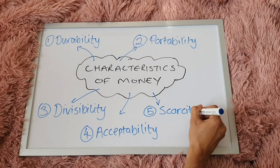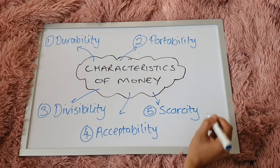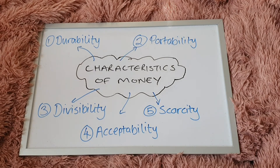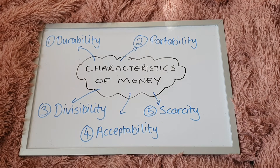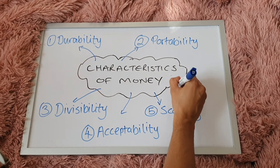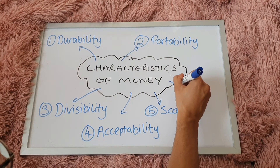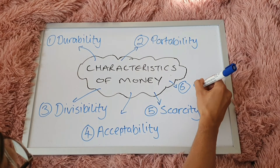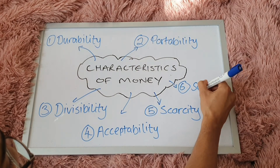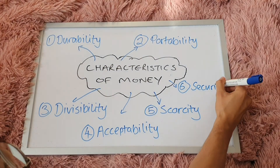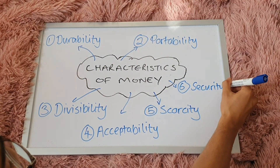Fifthly, and interestingly, money should be scarce — it should be limited in supply in order for the value to remain stable. Imagine if everyone had loads of money; the value of money is not going to be as high. But because it's scarce and very limited in amount, scarcity is also an important characteristic of money.